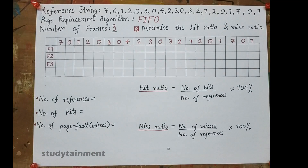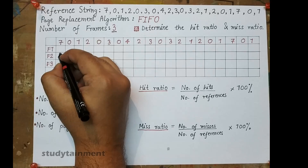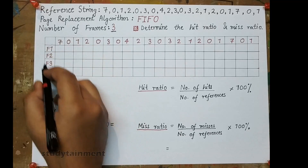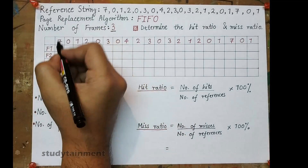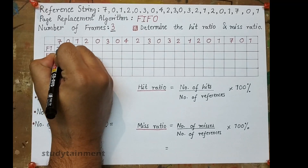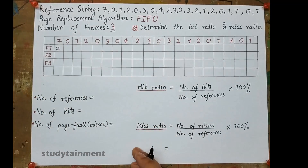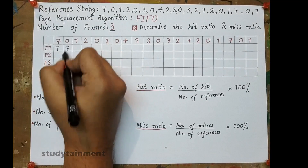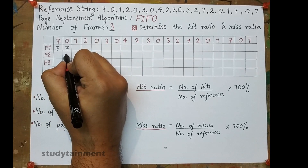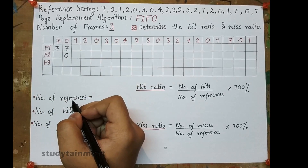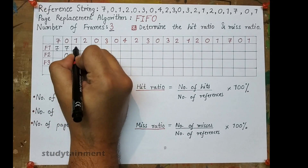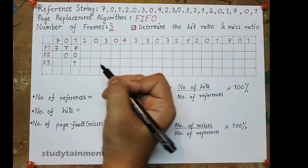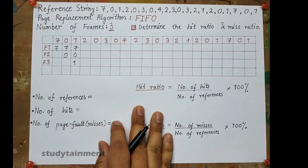At the start of the process, all frames are empty. 7 is not present, so this is a page fault — 7 is assigned to F1. Next, 0 is also not present, so 0 is assigned to F2 — another page fault. Then 1 is also not present, so 7 and 0 remain as they are, and 1 is placed in F3 — this is also a page fault.